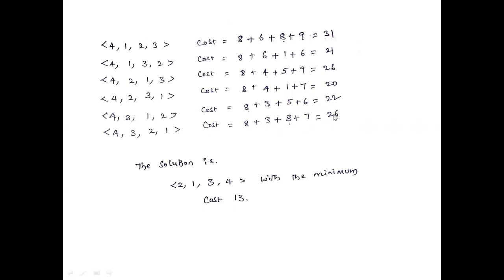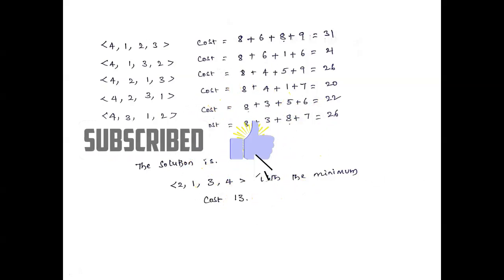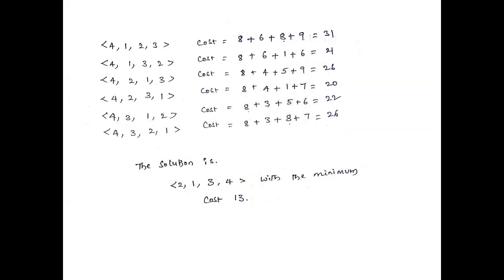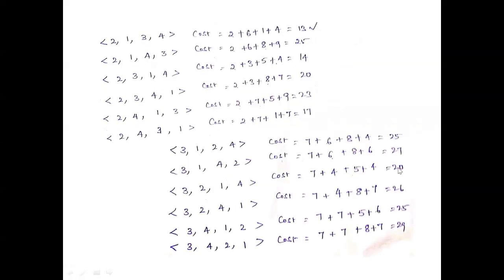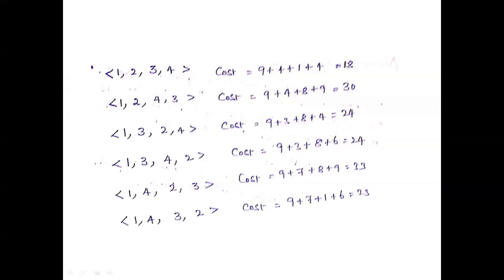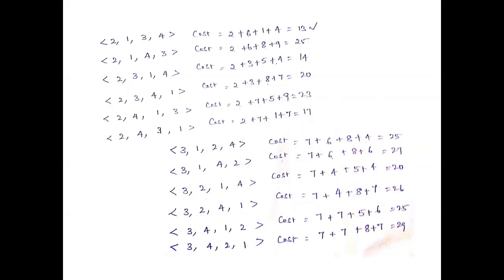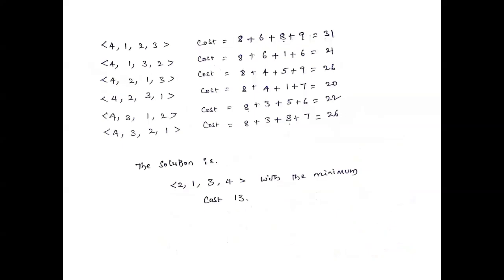Among all possibilities, we need the minimum cost. The minimum from the first possibility is 18, from the second possibility is 13, from the third possibility is 20, and from the fourth possibility is 20. Among these, 13 is the minimum, so that is the best case — assigning that particular job to the corresponding person gives the minimum cost.